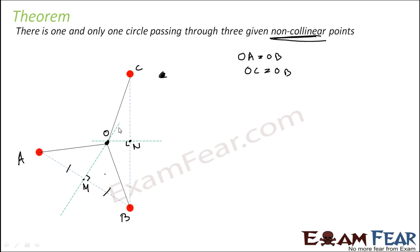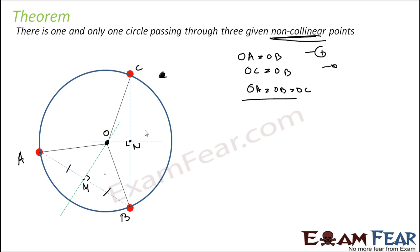Prove these two triangles are congruent, prove OB is equal to OC. So using these two equations, if you merge, you get: OA is equal to OB is equal to OC. That means all three lengths are equal. If these lengths are equal, we can consider them to be a radius and draw a circle.